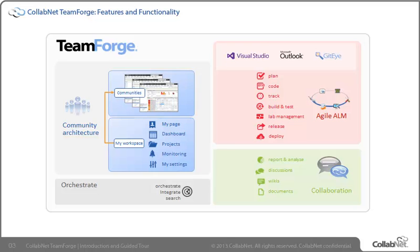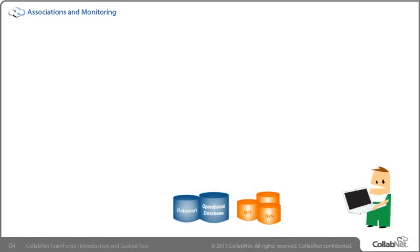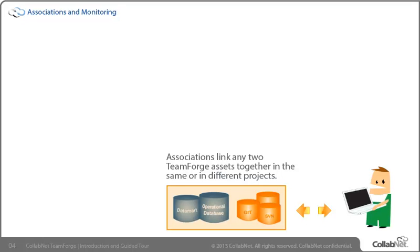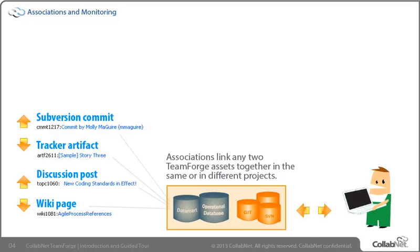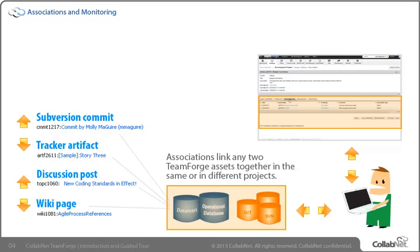Projects are managed by project administrators who configure project tools and determine which tools and assets each project member can access via configurable, role-based access controls. With assigned permissions, team members can work with tools and project assets via the TeamForge web interface or one of the CollabNet desktops. All assets for each TeamForge project are stored in a central repository. TeamForge users have the ability to link any assets within a project to assets in the same or different projects through the TeamForge association functionality.